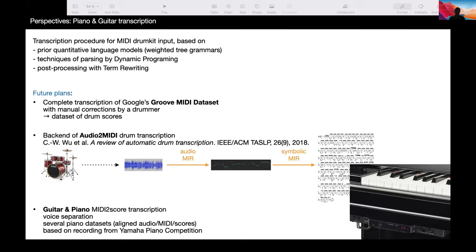To summarize, we are working on a transcription procedure for MIDI drum kits. It's based on parsing with prior quantitative language models. Parsing is done with dynamic programming techniques in polynomial time. And we also use post-processing that we improve the readability of the score in particular with term rewriting.